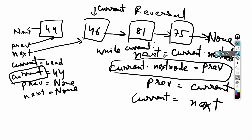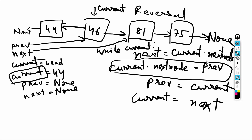Again, next = current.next_node — we store 81 so that link doesn't get lost, because we're about to point 46 to 44. Then current.next_node = previous, linking 46 to its previous node. After that, previous moves from 44 to 46, and current moves from 46 to 81. This process keeps going, moving right and reversing links, until current reaches None.